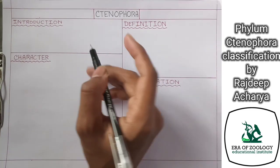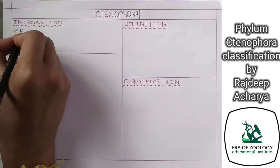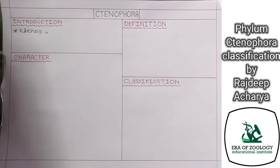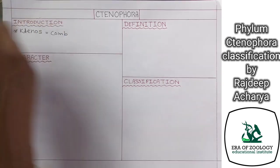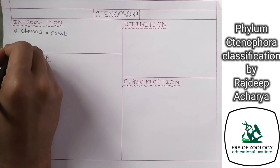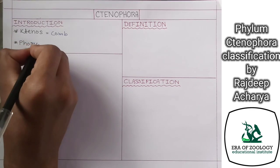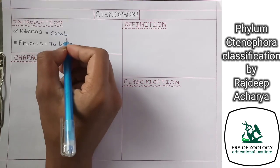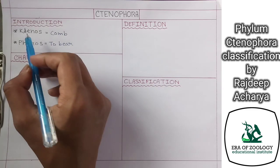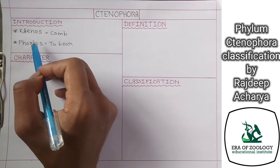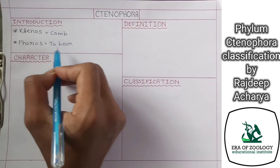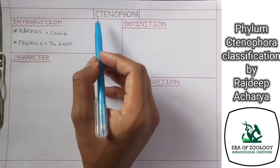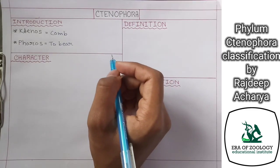Ctenophora is a phylum name which came from two Greek words. One Greek word is 'ktenos' which stands for 'comb', and another Greek word is 'phoros' which stands for 'to bear'. So basically Ctenophora means those animals which bear comb plates in their body.